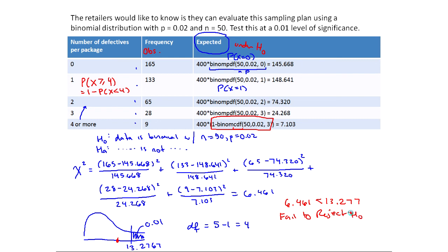So if I fail to reject H naught, what I'm actually saying is there's no evidence it's not this distribution. So there's no evidence that this does not follow the proposed distribution. In other words, I'm not proving H naught. You can never prove H naught. But I don't have evidence that this distribution won't work.